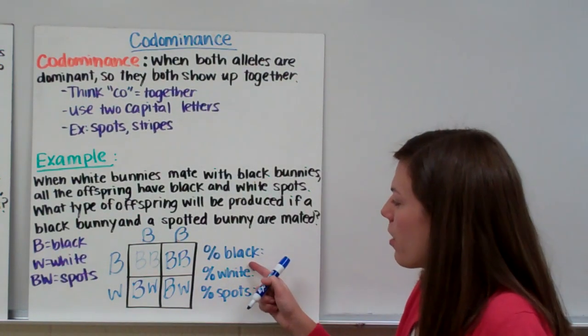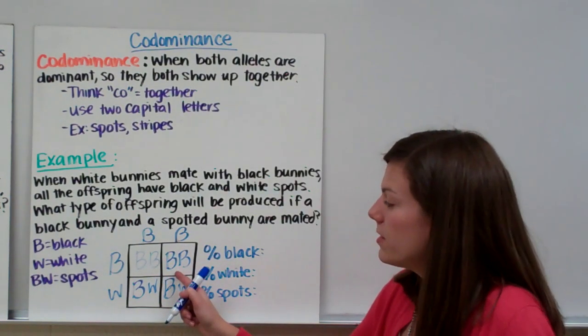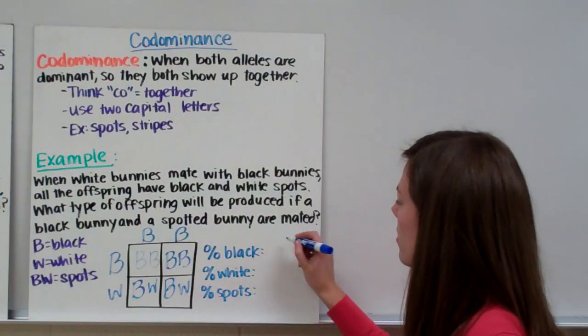Our percent black will be any of our bunnies that have two Bs. We have two Bs here and two Bs here, so two out of four is 50%.